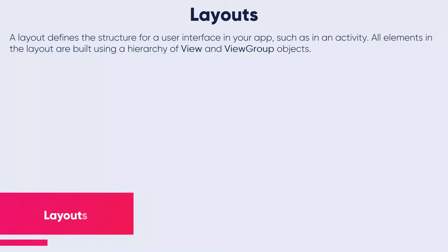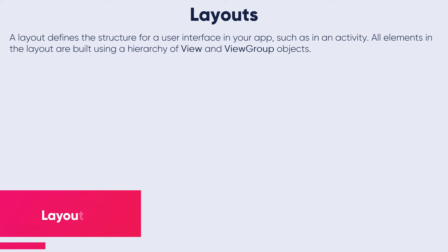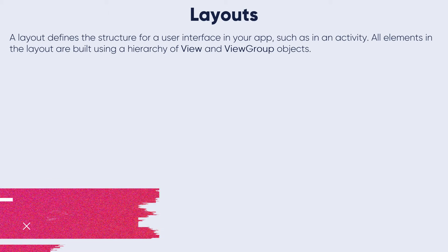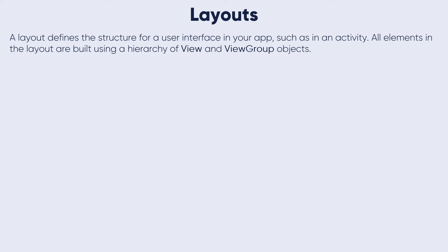A layout defines the structure for a user interface in your app, such as in an activity. All elements in the layout are built using a hierarchy of view and view group objects.